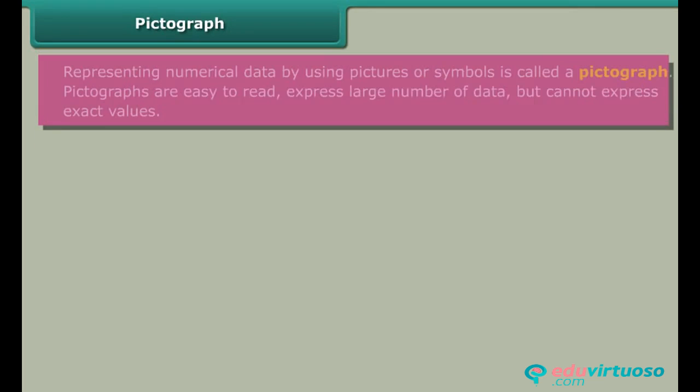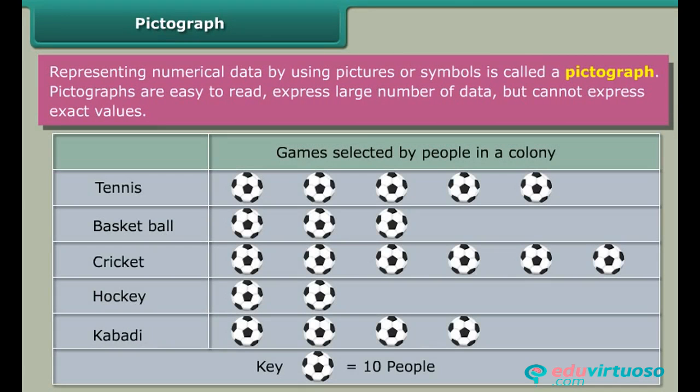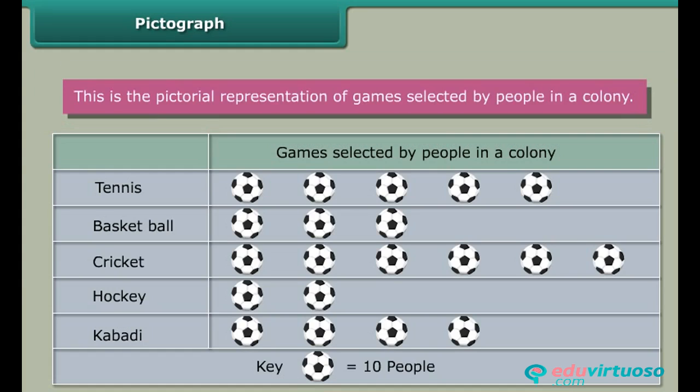Pictograph: Representing numerical data by using pictures or symbols is called a pictograph. Pictographs are easy to read and express large numbers of data, but cannot express exact values. This is a pictorial representation of games selected by people in a colony.